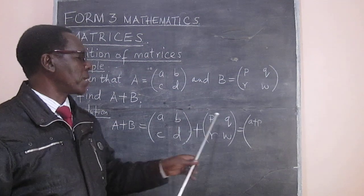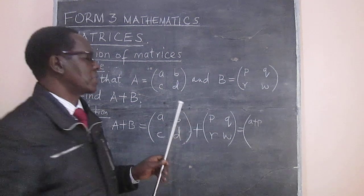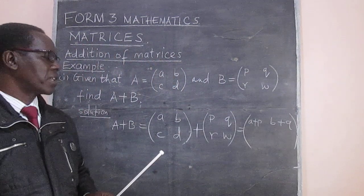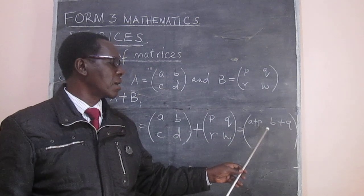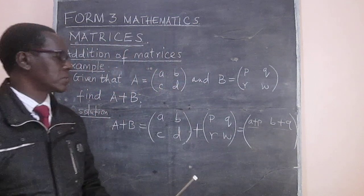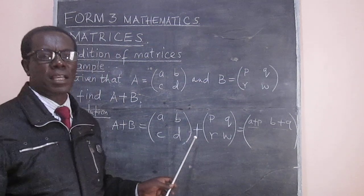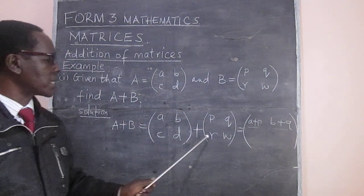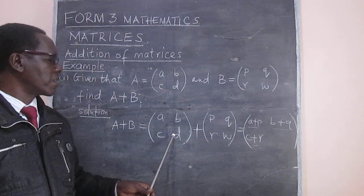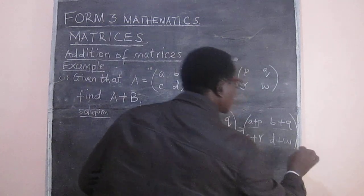You can go to this one — that is B plus Q. The first element here, add it to the first element. The next one, B, will be B plus Q. So we get A plus P and the other element becomes B plus Q. Then we come down here and C will go with R because they are exactly in the same position in the matrix. So we have C plus R. And then finally we have D plus W.